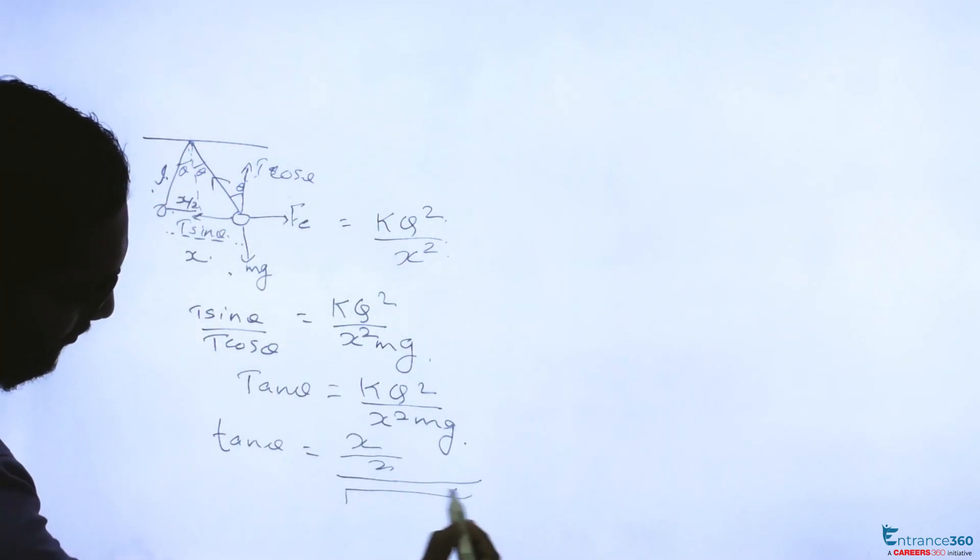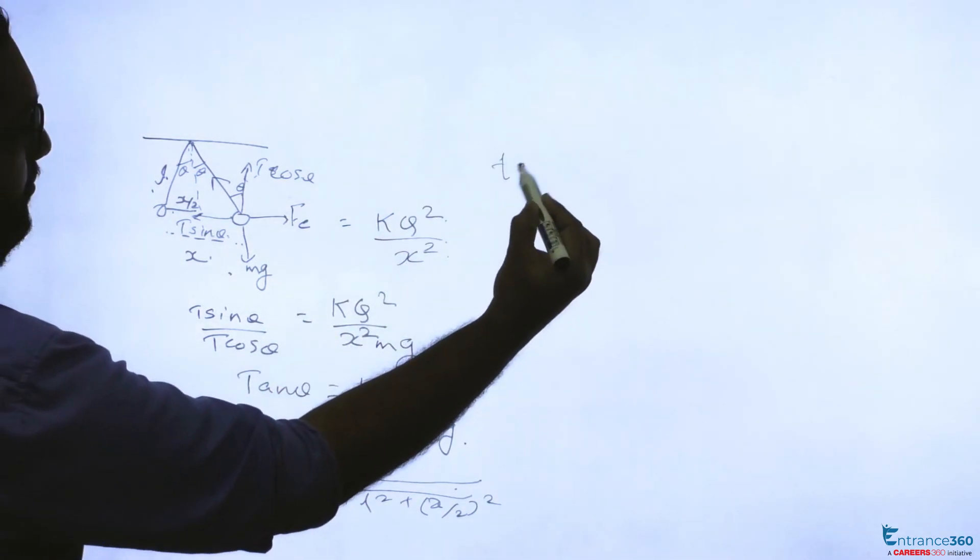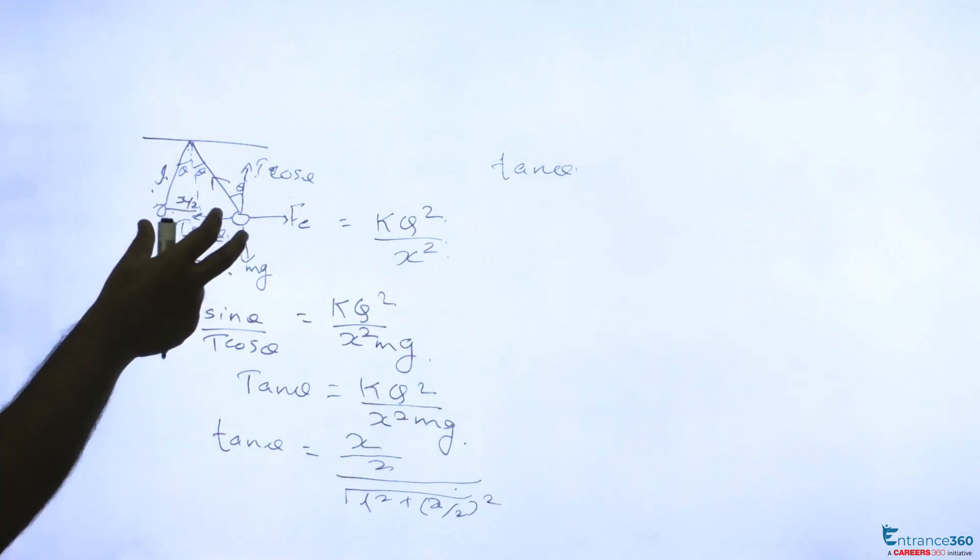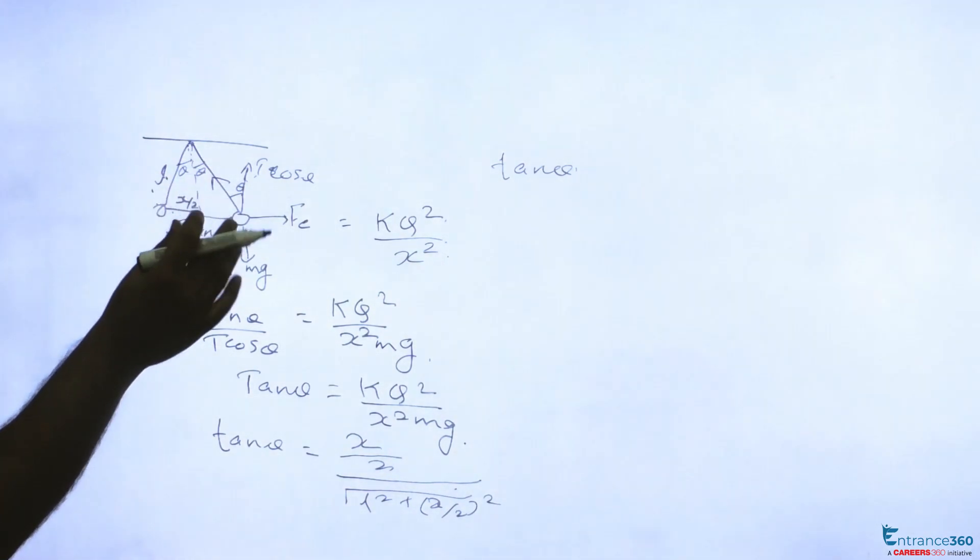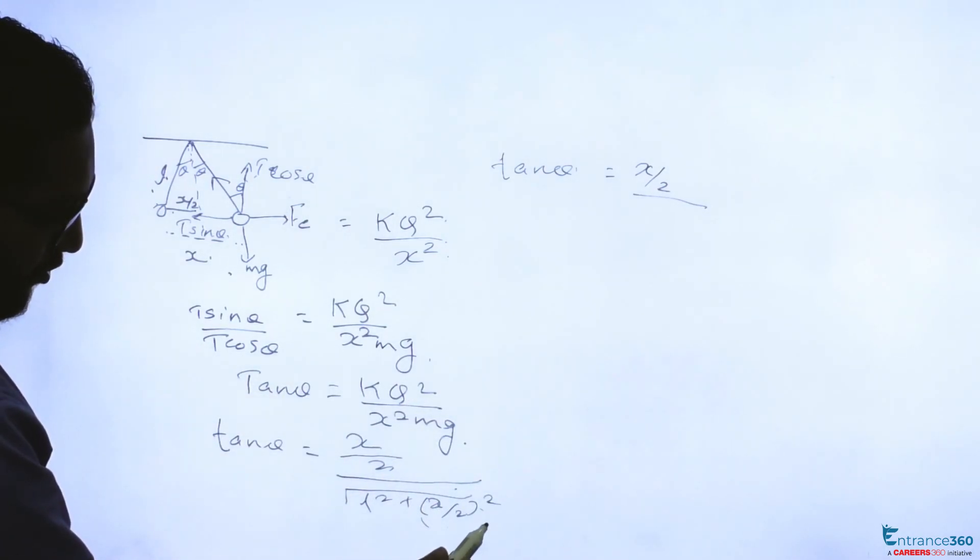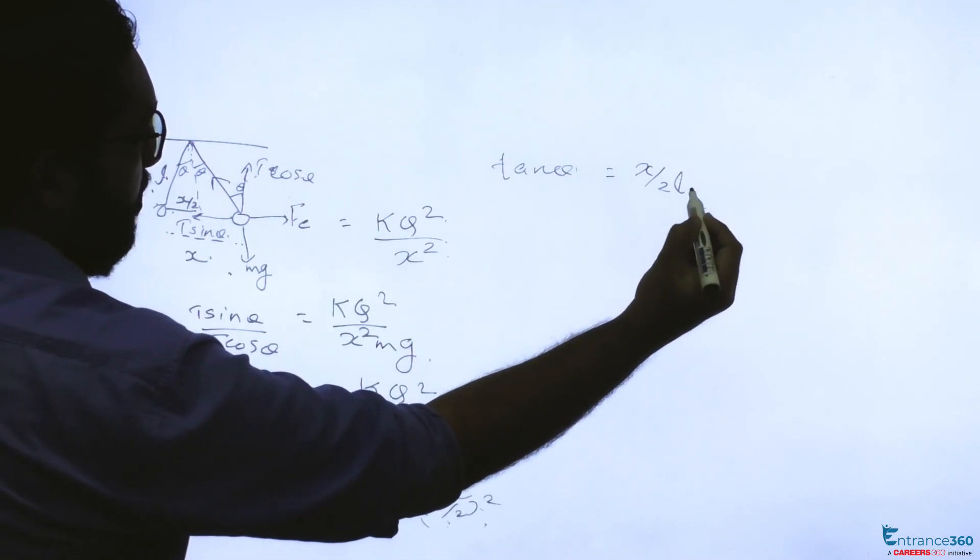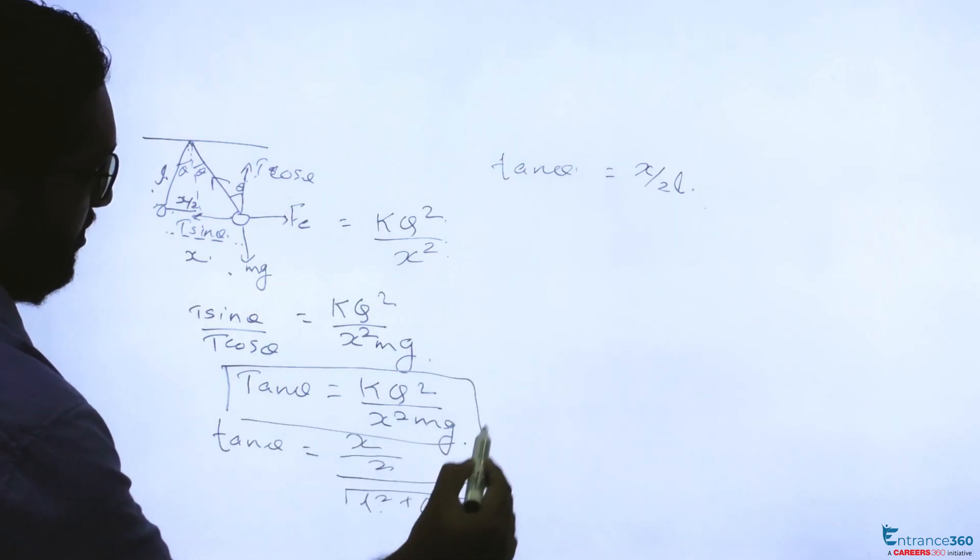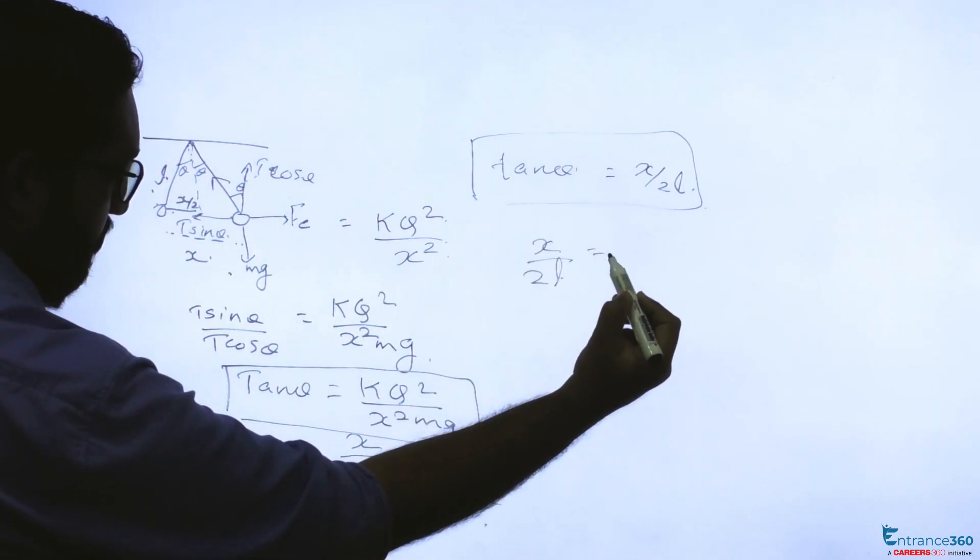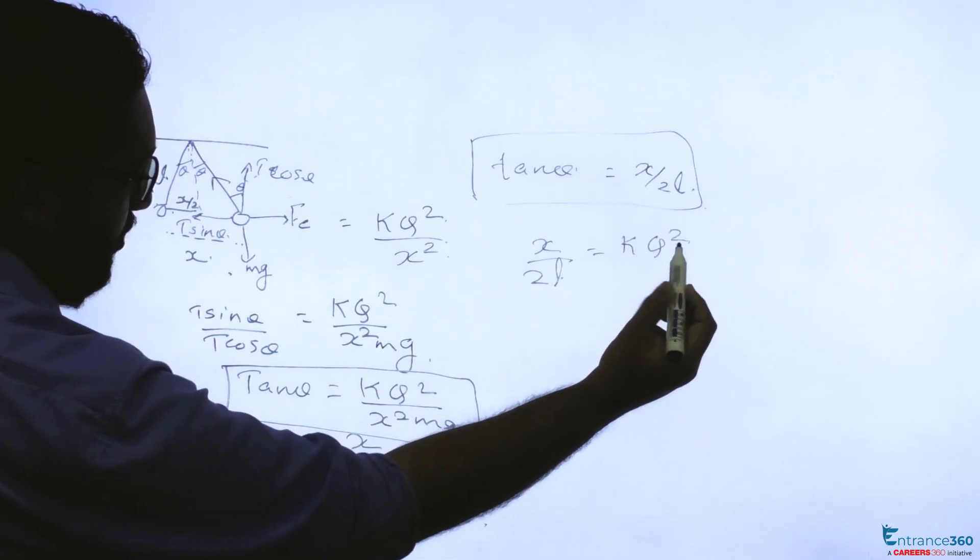So tan theta equals, as our distance is very very less than the length of the string due to the leakage of charges. This sphere will start approaching each other with a repulsive force, but this distance is too small, so x by 2 whole square will be again too small, so you can neglect this part. Remaining will be root of L square, which is L, so x by 2L. So we have tan theta equal to k q square by x square mg and x by 2L.